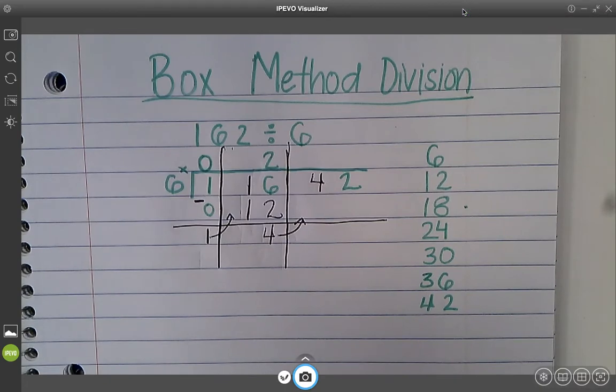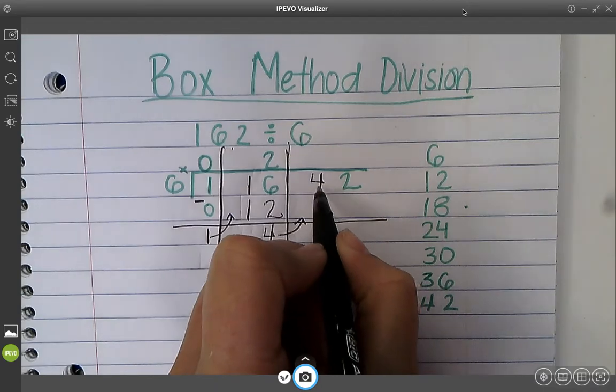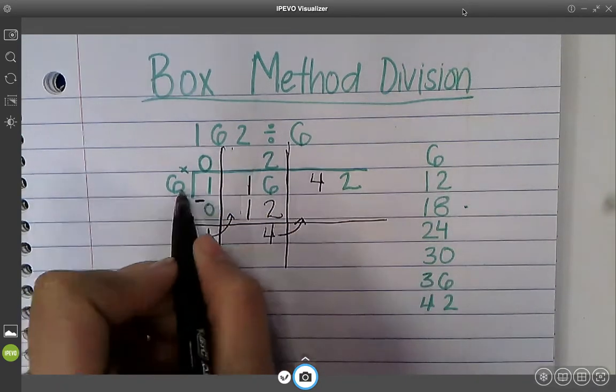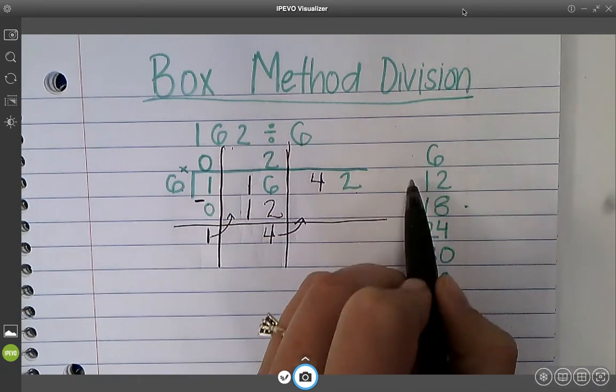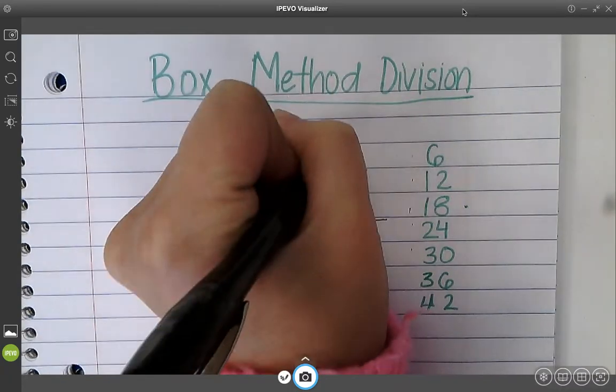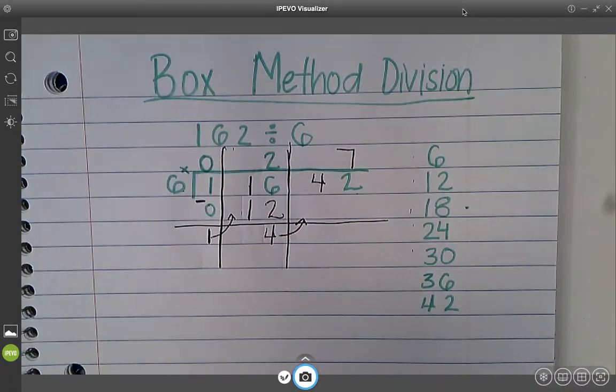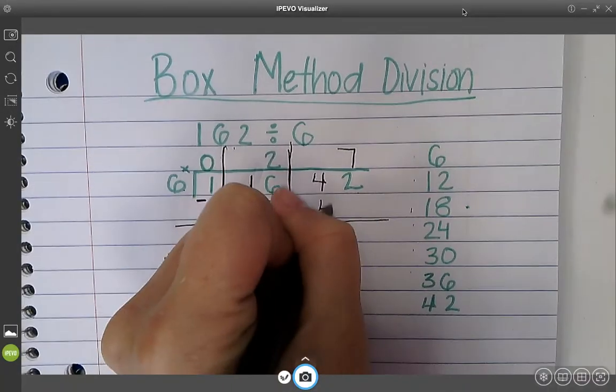Oh my goodness. Okay. So I have a perfect match here. 6 times 1, 2, 3, 4, 5, 6, 7. 42.